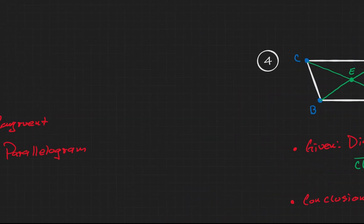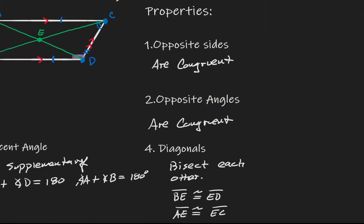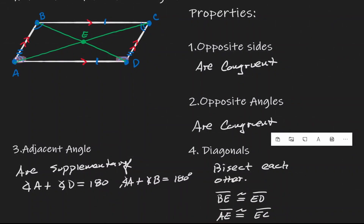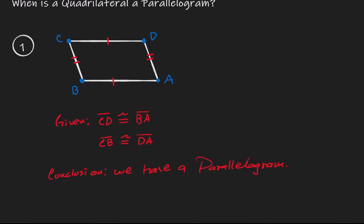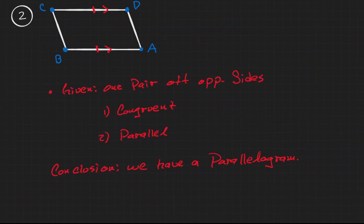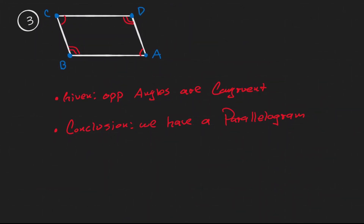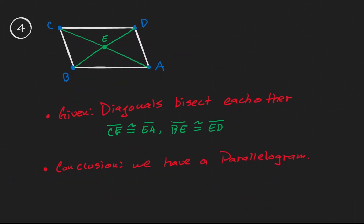Let's summarize what we have done today. We started by reminding ourselves what a parallelogram is, then looked at the different properties that come with it. We then examined four situations: if opposite sides are congruent, the quadrilateral is a parallelogram; if one pair of opposite sides is both congruent and parallel, it's a parallelogram; if opposite angles are congruent, it's a parallelogram; and if the diagonals bisect each other, it's a parallelogram.